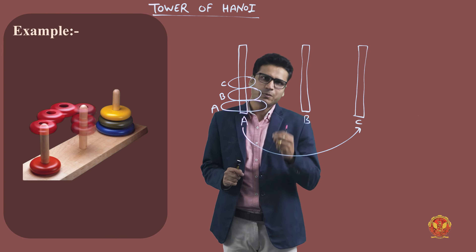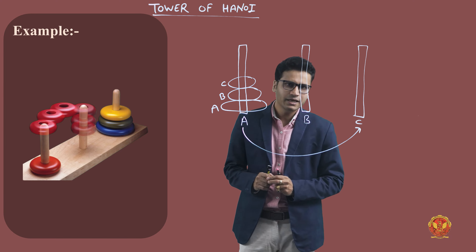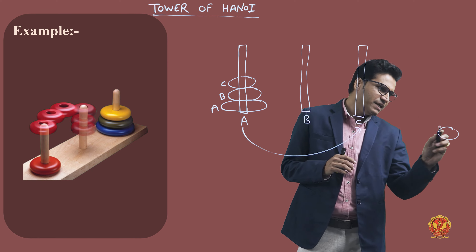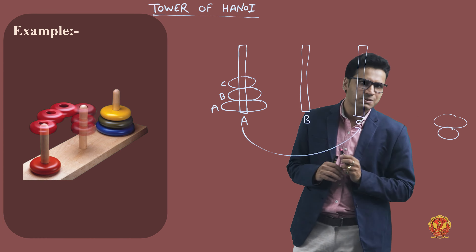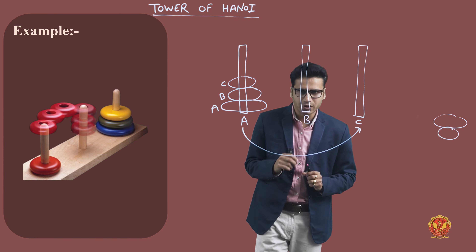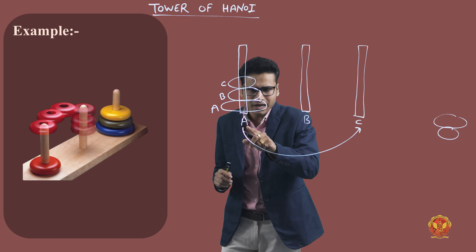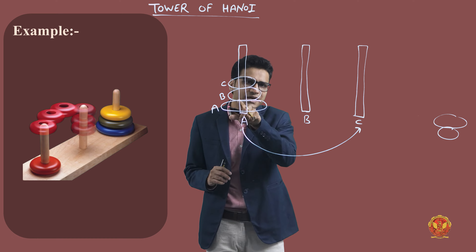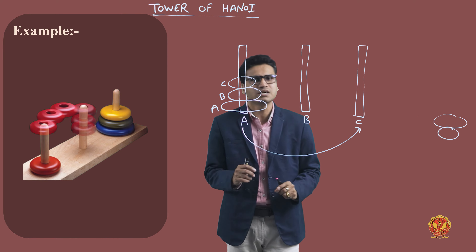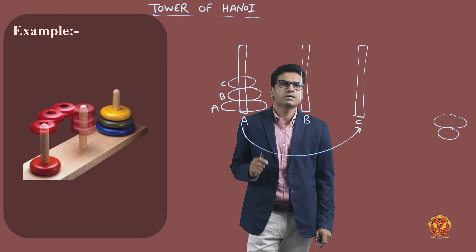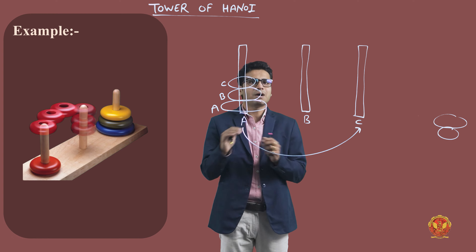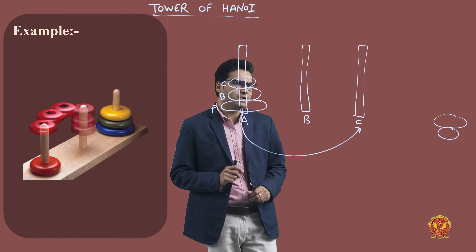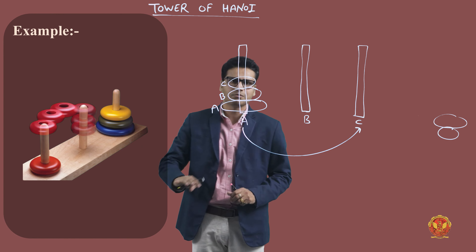We have to move all three plates from rod A to rod C, but the condition is that the number of movements should be minimum. Let's see how to solve this particular problem — I will also explain the algorithm.